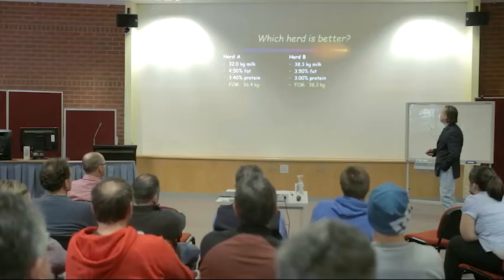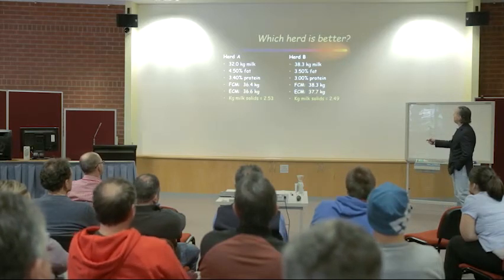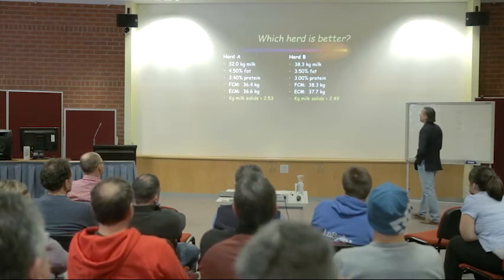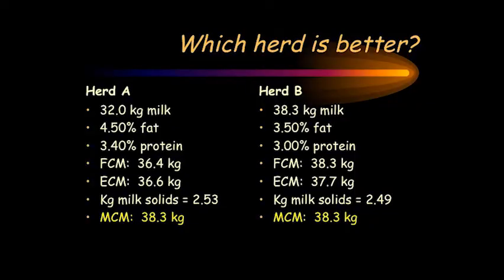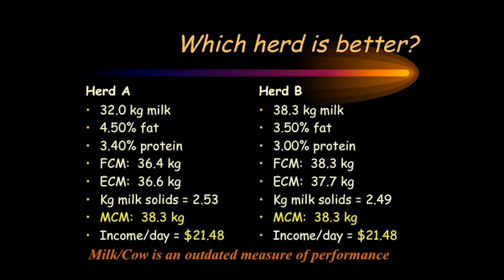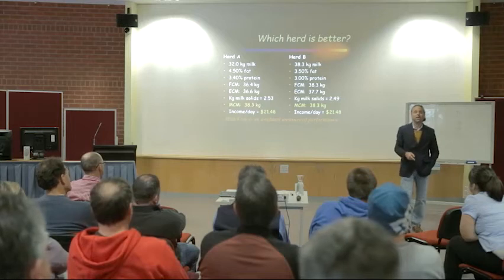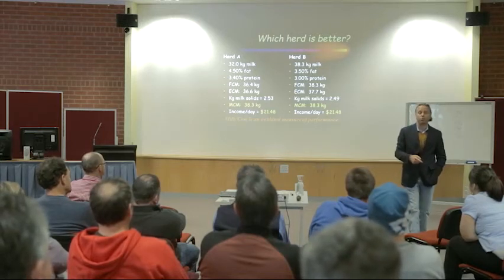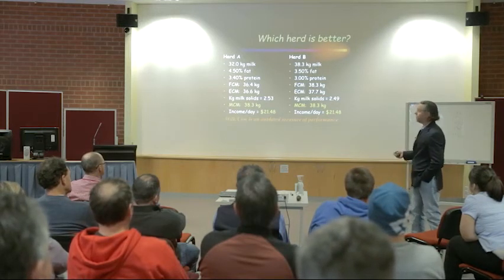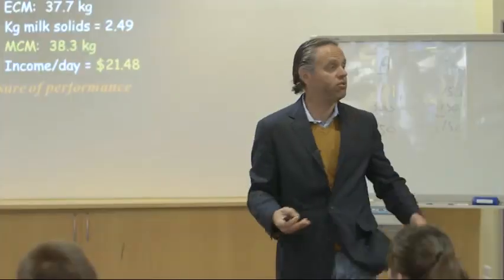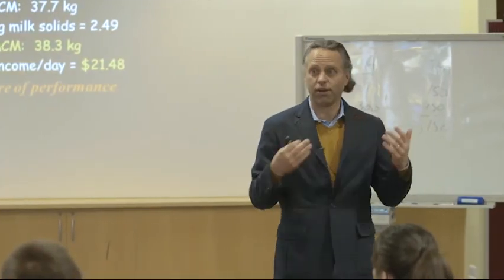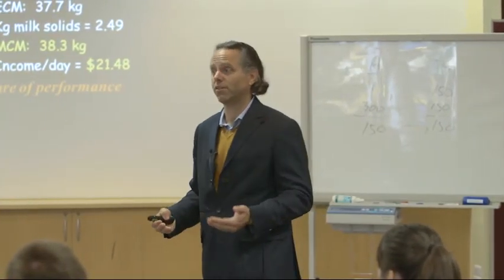Going back to our energy-corrected milk and kilograms of milk solids — our money-corrected milk, in the example I set up purposely, shows these two cows are identical. They're identical because the income per cow per day is exactly the same. Money-corrected milk is just an index of income per cow per day. These two herds economically in this market are exactly the same — there is no difference. The only thing we don't know for the final economic piece is how much feed they eat.